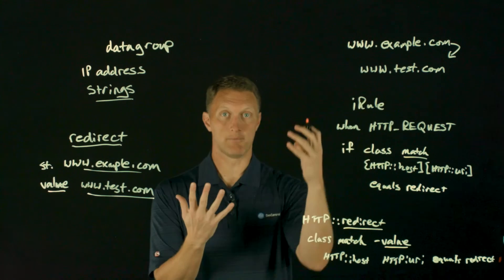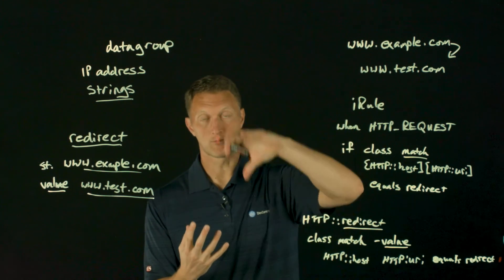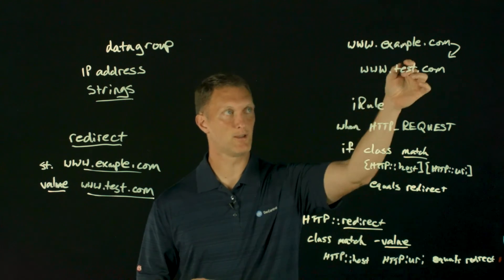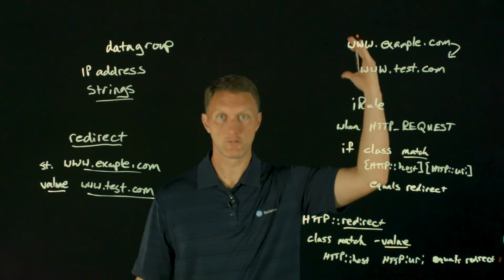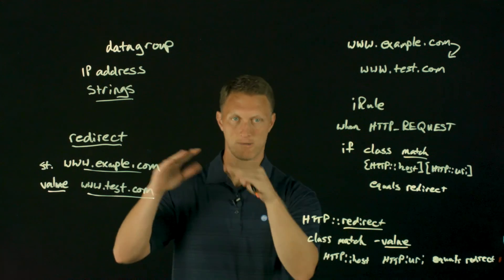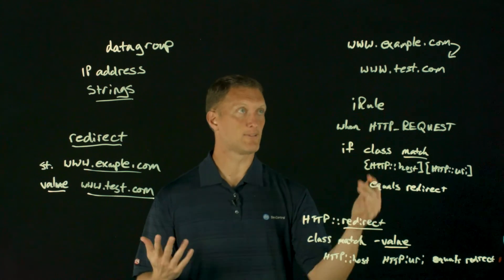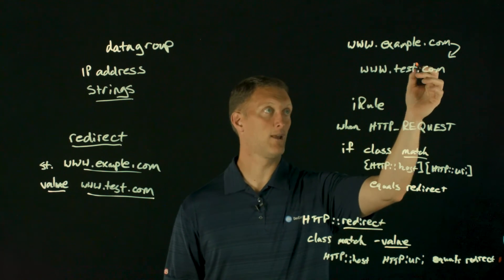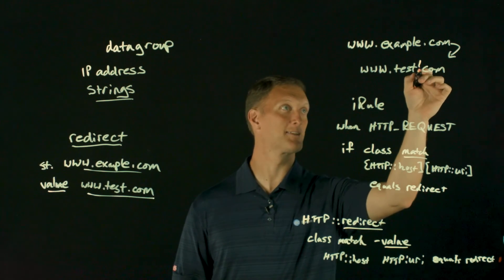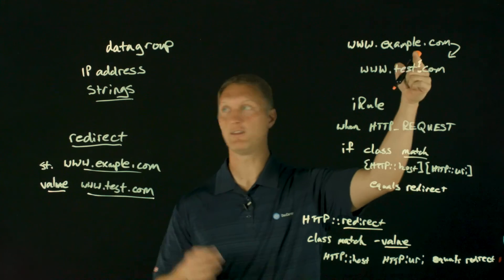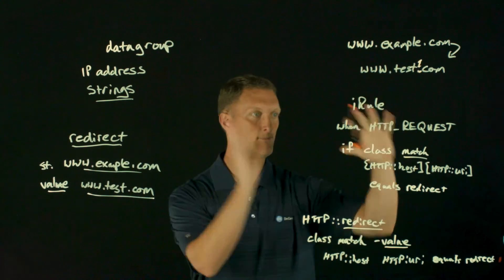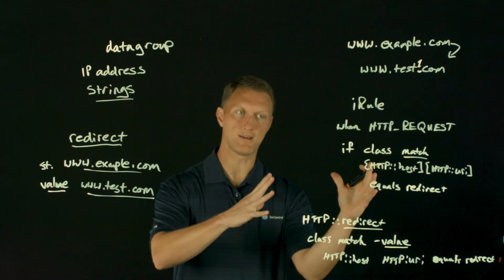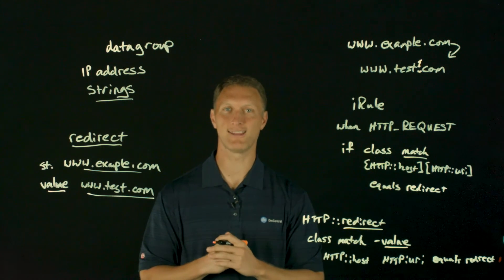That's how you can use data groups to accomplish redirects with an iRule. The way this becomes really powerful is not just for one host to another, but when you have hundreds of entries in a big list of data group values you want to manipulate. And if anything ever changes — like you don't want to go from example.com to test.com anymore, but to test-one.com instead — all you have to do is update your data group. The logic all stays the same and you're good to go. Hopefully that makes sense and you've learned a little bit about redirects and how you can use them with data groups. Thanks for watching this post of the week and we'll see you out there in the community.